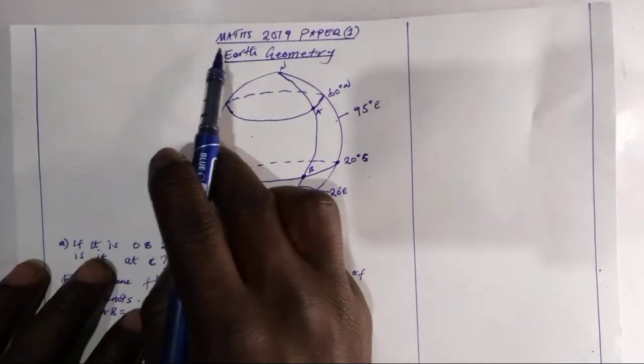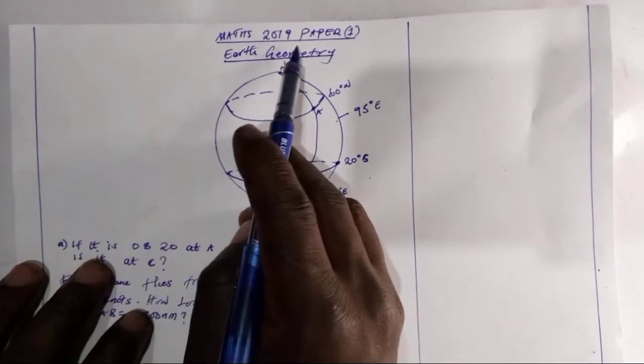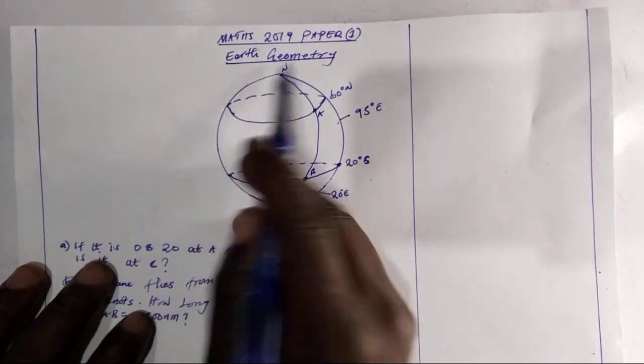Hello guys, welcome back. Today we're looking at mathematics, which is 2019 paper 1 under earth geometry.